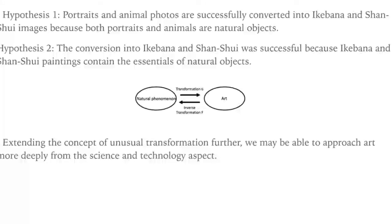When examining the characteristics of ikebana and sansui painting, we think that minimality and flexibility of the materials are appropriate for expressing the essence of natural objects and phenomena. Ikebana and sansui both try to remove unnecessary things from natural objects and express them with minimum expression — decomposing what constructs nature into minimum basic elements like mountains, rocks, water, streams, flowers, and leaves. The individual elements of ikebana and sansui have flexibility in their placement. The reason that portrait and animal photos can be converted into ikebana and sansui is because of these characteristics being appropriate for the unusual transformation. We believe that by extending the concept of unusual transformation further, we may be able to approach art creation more deeply from the science and technology perspective. Thank you for listening.